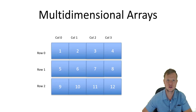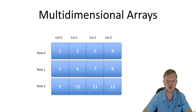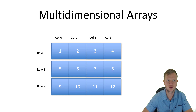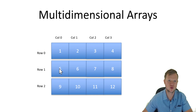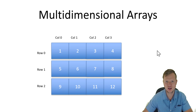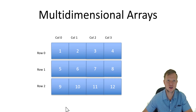Now we will look at a two-dimensional array. It's actually like a table with rows and columns. At row 0 we have columns 0, 1, 2, 3; at row 1 we have columns 0, 1, 2, 3; and row 2 — this extends depending on how big you define your multi-dimensional array.